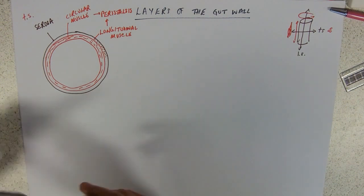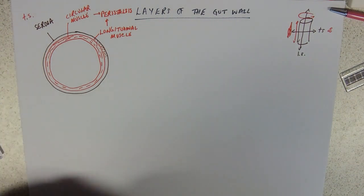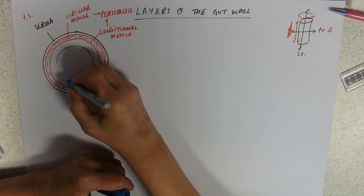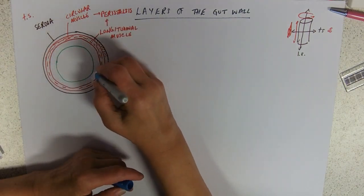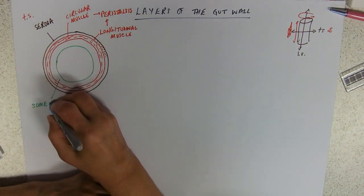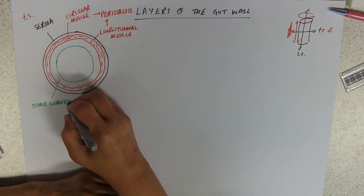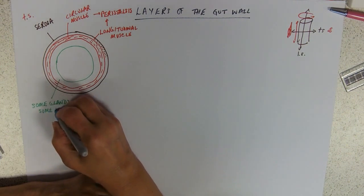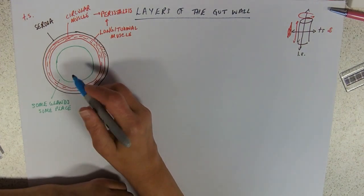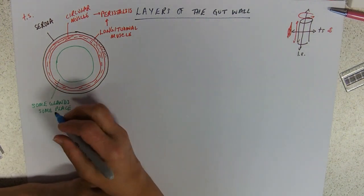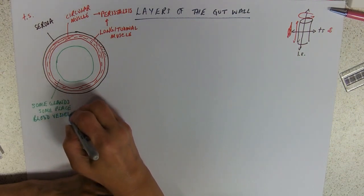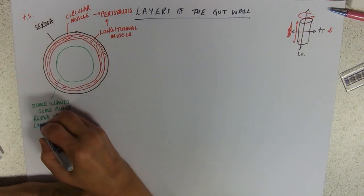Just inside of that we've got a layer called the submucosa. The submucosa has some glands. In some places, for example in the duodenum, this is where Brunner's glands are located, but they're not found anywhere else in the gut apart from the duodenum. We've also got blood vessels and lymph vessels in there.